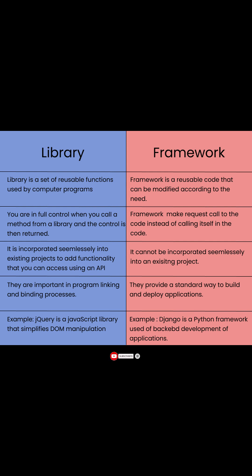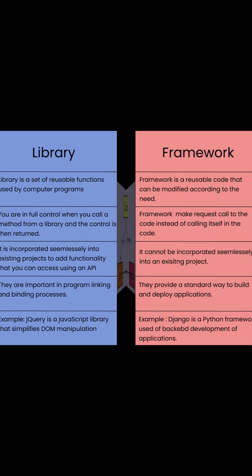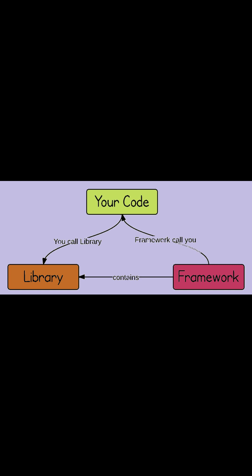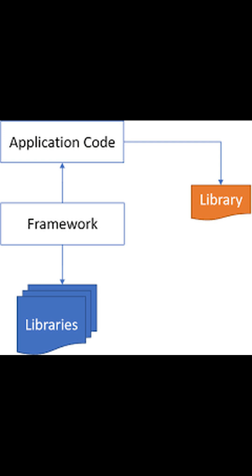Libraries provide developers with predefined functions and classes to make their work easier and boost the development process. A framework, on the other hand, is like a foundation upon which a developer builds applications for specific platforms. A Python library is a collection of packages that perform a specific operation, whereas a framework contains the basic flow and architecture of an application.